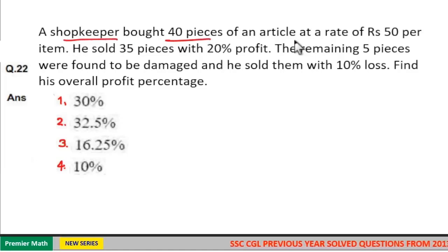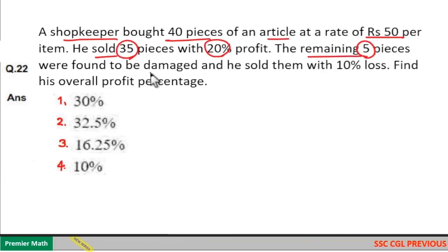A shopkeeper bought 40 pieces of an article at a rate of rupees 50 per item. He sold 35 pieces with 20 percentage profit. The remaining 5 pieces were found to be damaged and he sold them with 10 percentage loss. Find his overall profit percentage.